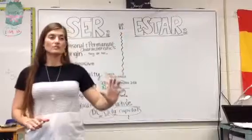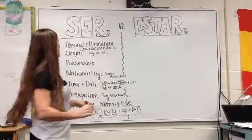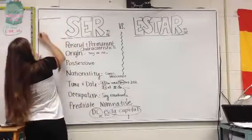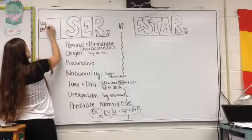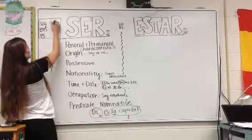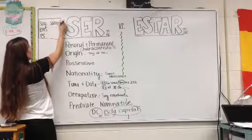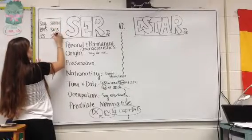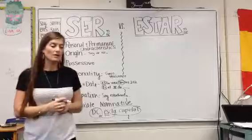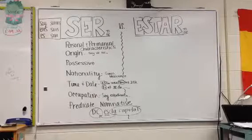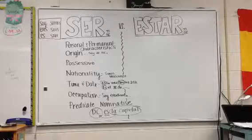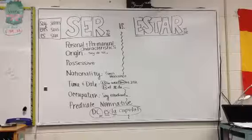The six conjugations of ser are: yo soy, tú eres, nosotros somos, ustedes son — and that's missing the form soís. To summarize: I am = soy, you are = eres, any one person is = es, we are = somos, y'all are = soís, and plural people are = son.